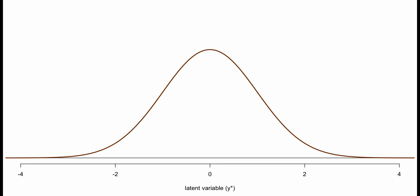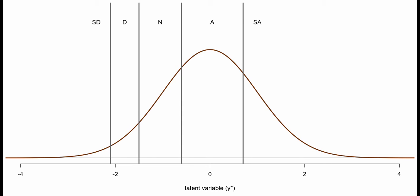The idea of the latent variable is that as you score more highly on it, you're more likely to respond higher on the ordinal scale. We add break points called tau cuts, which separate the normal curve into regions corresponding to different response categories.